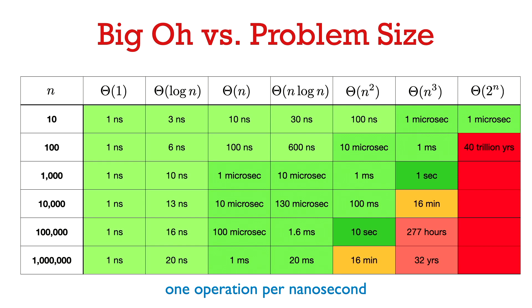n ranges from 10 to a million in this table, the input size. These numbers that I've written in the table are computed assuming that the hidden constant factor is just one, and I'm also assuming that one operation takes one nanosecond.